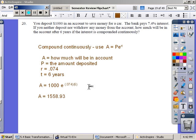Problem number 20. You deposit $1,000 in an account to save money for a car. The bank pays 7.4% interest. If you neither deposit nor withdraw any money from the account, how much will be in the account after 6 years if the interest is compounded continuously?